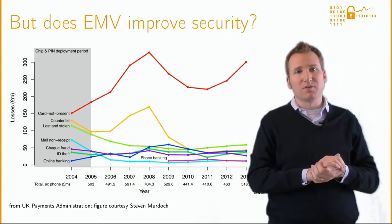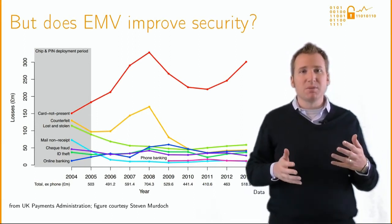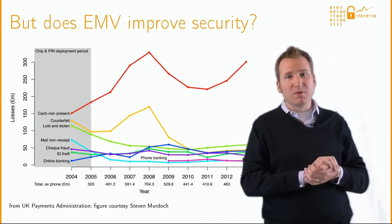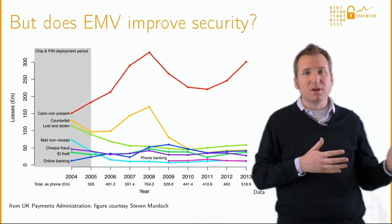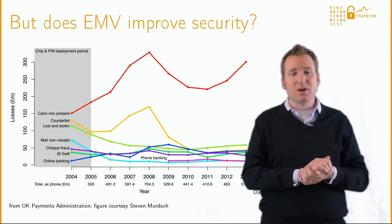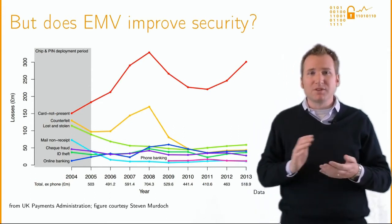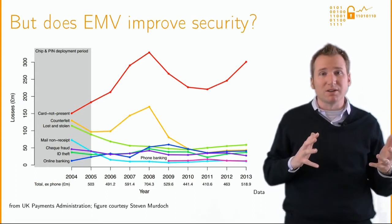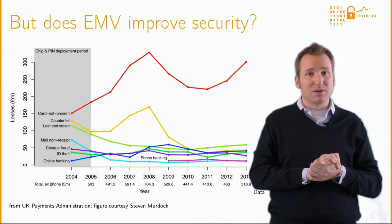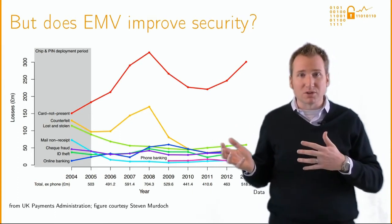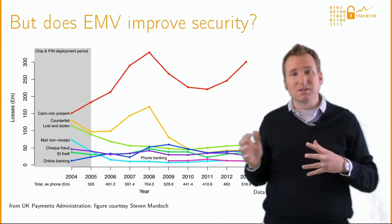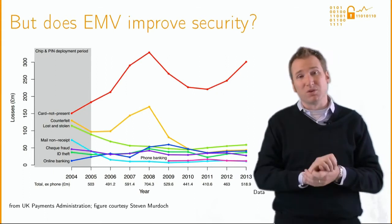As predicted, losses from counterfeit cards and lost or stolen cards fell, but this was accompanied by a huge spike in card-not-present fraud, as seen in red. Fraudsters reacted to the deployment of chip and pin by changing tactics — from using copied cards on British high streets to skimming mag stripes and cashing out cloned cards in countries that hadn't yet adopted EMV, or by making online purchases. This illustrates how attackers can quickly adapt to the security mechanisms defenders put in place, and also shows the importance of externalities in security investment. UK banks may upgrade their own infrastructure, but because payments are global, attackers can exploit weaknesses elsewhere in the system that still influence the bottom line of those who have already spent money to improve their security.